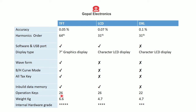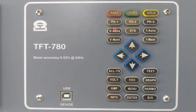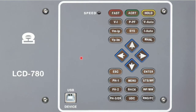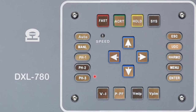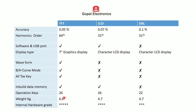Regarding operation keys: 26 operation keys are provided in the TFT model; the LCD model also has 26 operation keys; and the DXL model has 22 operation keys. The weight of the TFT model is 6.6 kg and the weight of the LCD model is heavier, while the DXL model is 4.7 kg. Internal hardware grade of the TFT, LCD, and DXL models is 5-star, 4-star, and 3-star respectively.